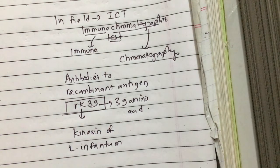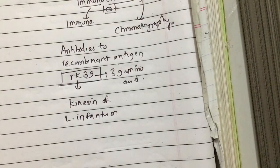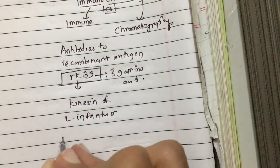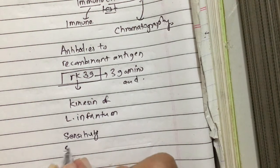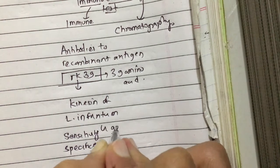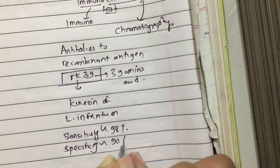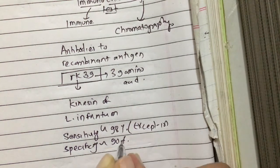If the antibodies are present in the body, the antigen and antibody will react and form a colored band. This rapid diagnostic test has high sensitivity and high specificity — nearly 98% sensitivity and nearly 90% specificity — except in East Africa.